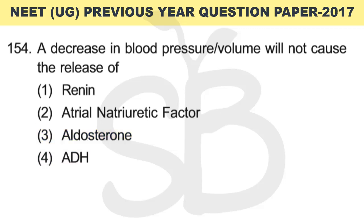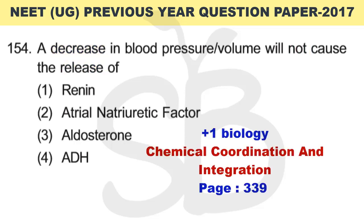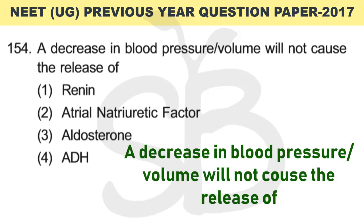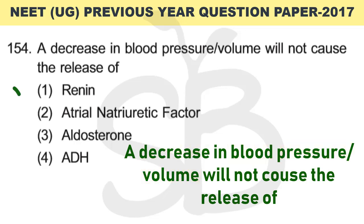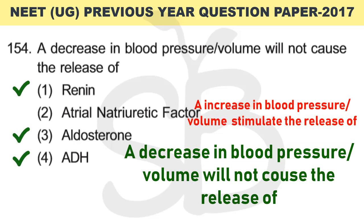This is from Plus 1 biology, chapter: Chemical Coordination and Integration, page number 339. In our body, a decrease in blood pressure and volume stimulates three hormones: renin, aldosterone, and ADH. When blood pressure increases, it stimulates the release of atrial natriuretic factor (ANF).